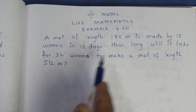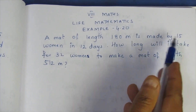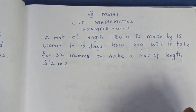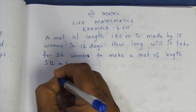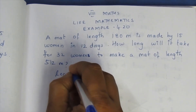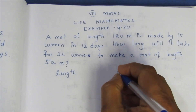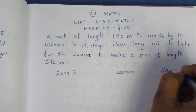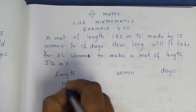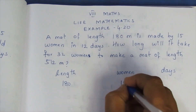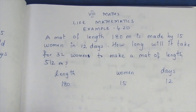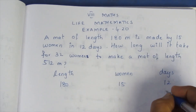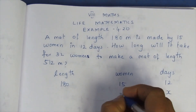If you see, a mat of length — how long will it take for 15 women in 12 days? We need to set up the table. Length of the mat: 180. Number of women: 15. Number of days: 12. How long will it take for 32 women?